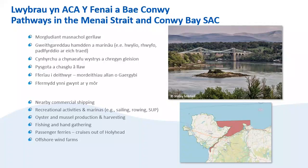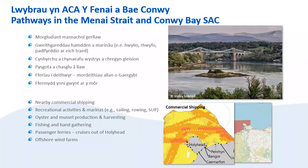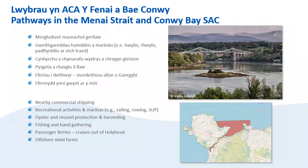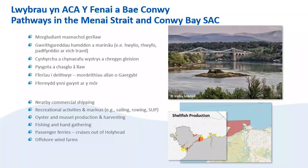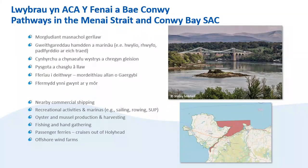Now we'll look at the potential pathways within each of the SACs we're focusing on in this project, starting with the Menai Strait and Conwy Bay SAC. The SAC is close to busy commercial shipping lanes as you can see in this heat map from a recent NRW report. The darkness of the pixel indicates the intensity of that pathway. Recreational boating and other recreational activities like sea rowing and stand-up paddle boarding are very popular in the SAC. The straits are also a key area for oyster and mussel production. Fishing and gathering occurs throughout the SAC. Passenger ferries and cruises operate out of the larger ports and offshore wind farms may also offer a stepping stone for INNS to spread into the SAC.